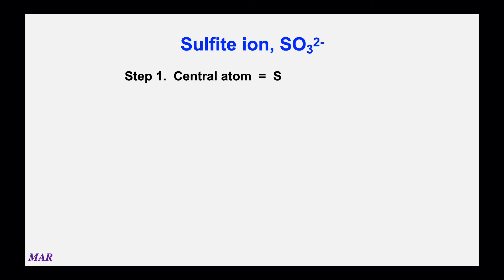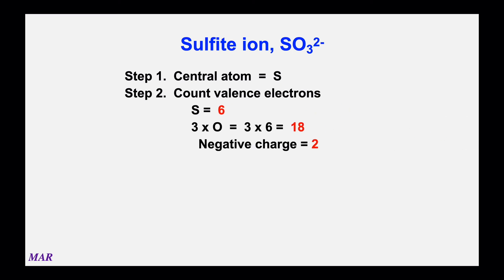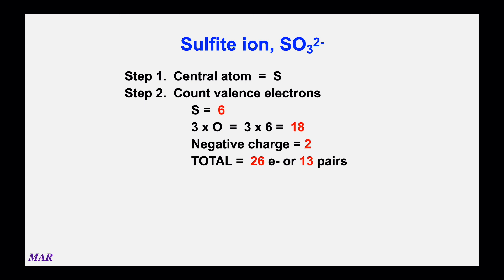Let's look at the Lewis structure for sulfite. Sulfite is an ingredient in some wines as a preservative and is a polyatomic ion related to sulfate, SO4 minus two. The central atom is sulfur, the first atom and least electronegative. Sulfur is in group 6 with six valence electrons, oxygen is in group 6 with six as well: six plus three times six equals twenty-four. But this is an ion, so we need to account for the charge.